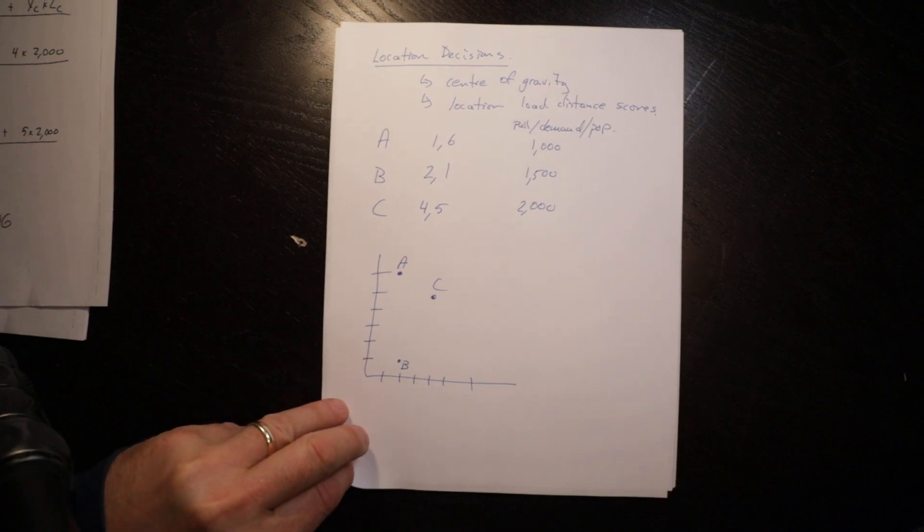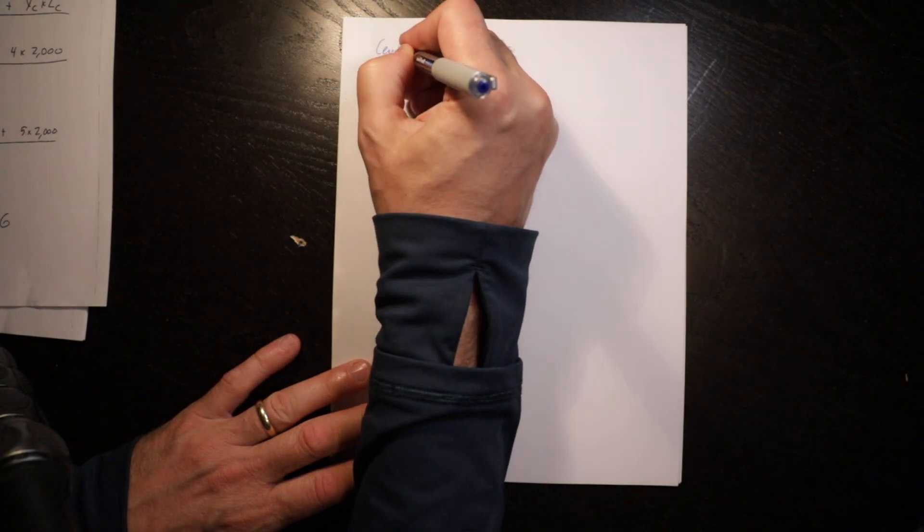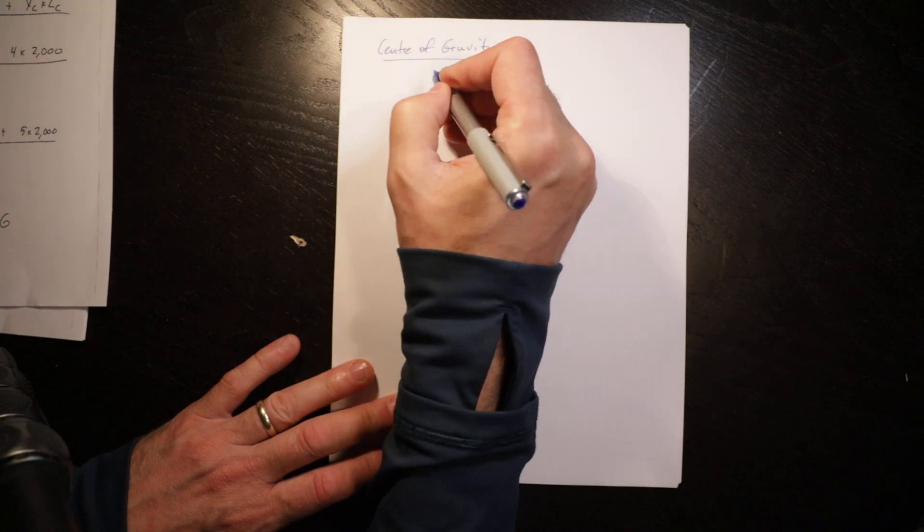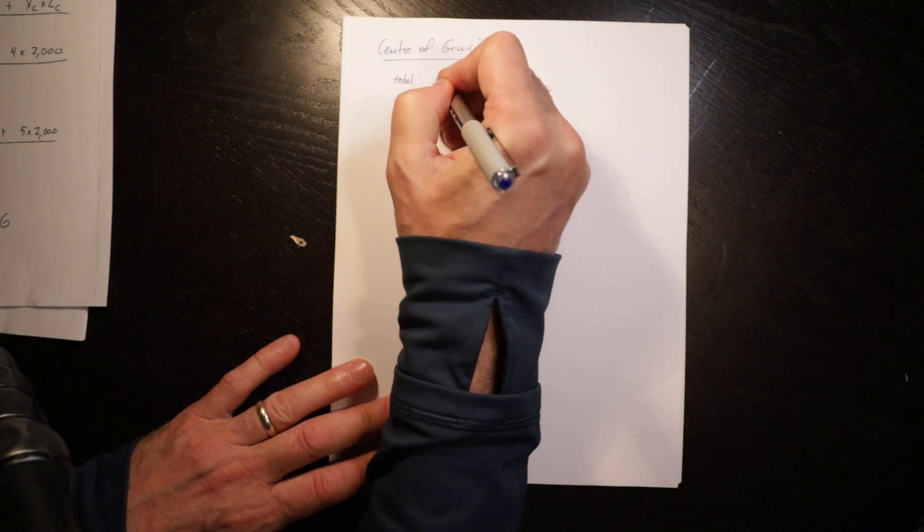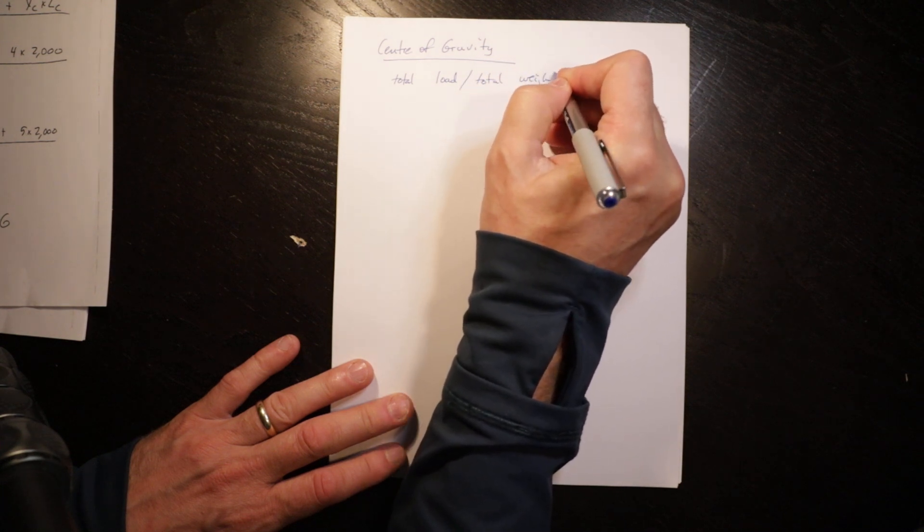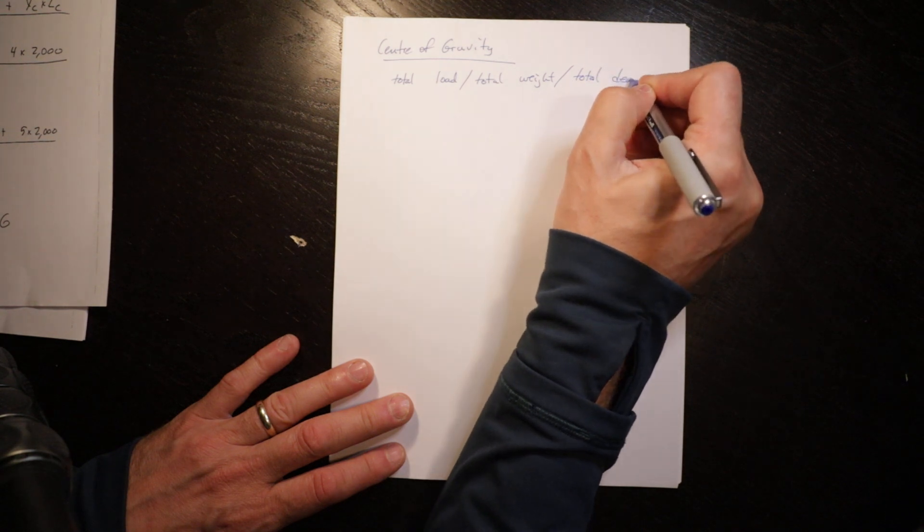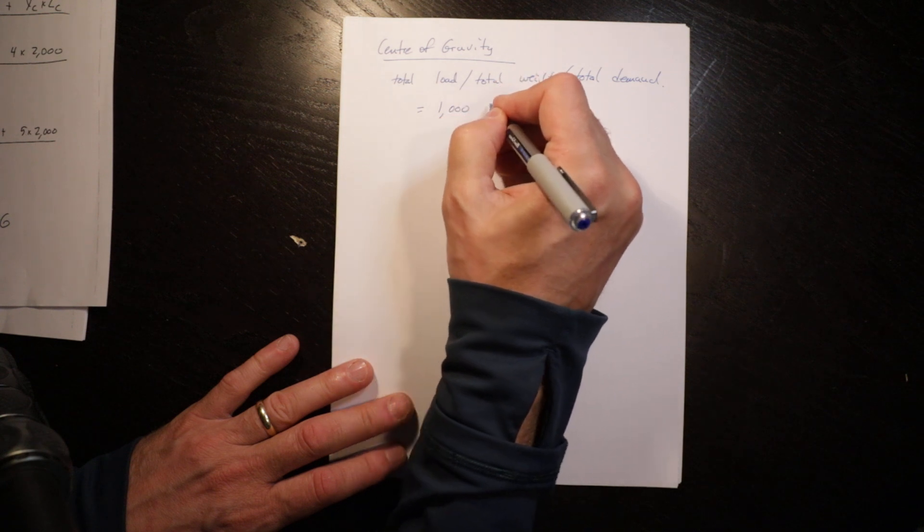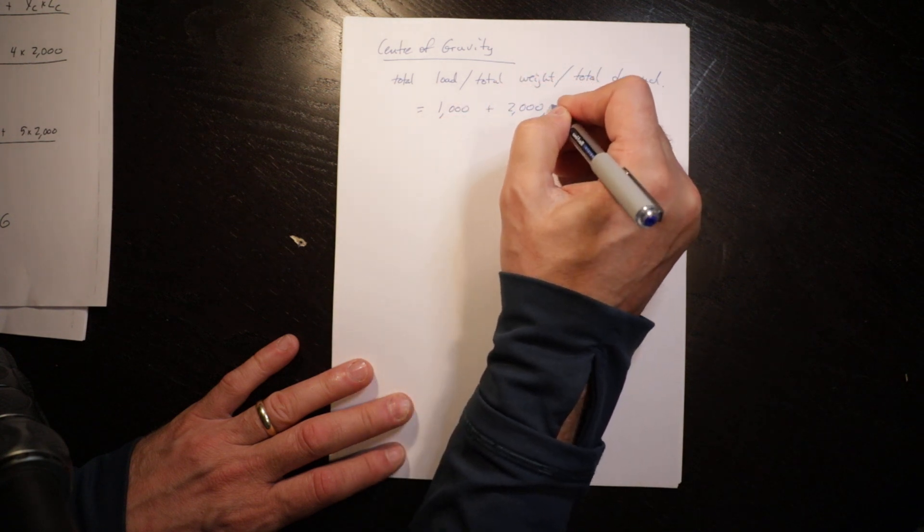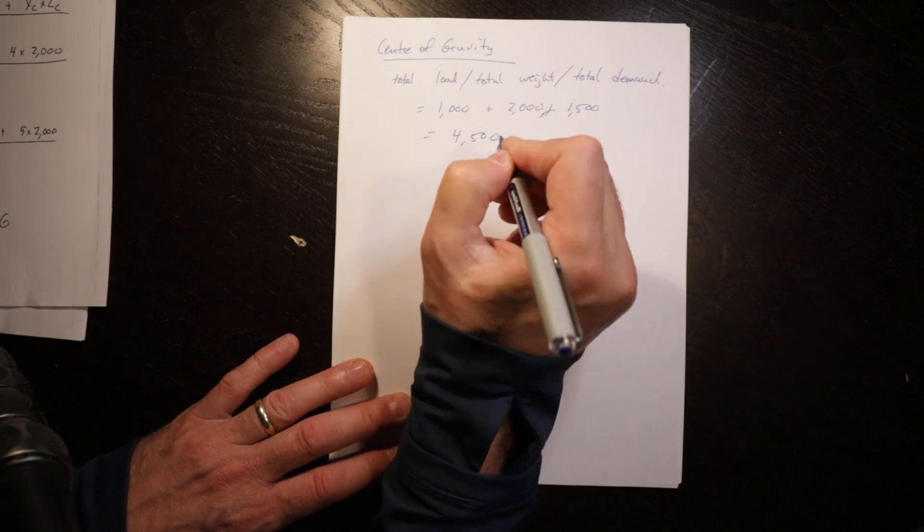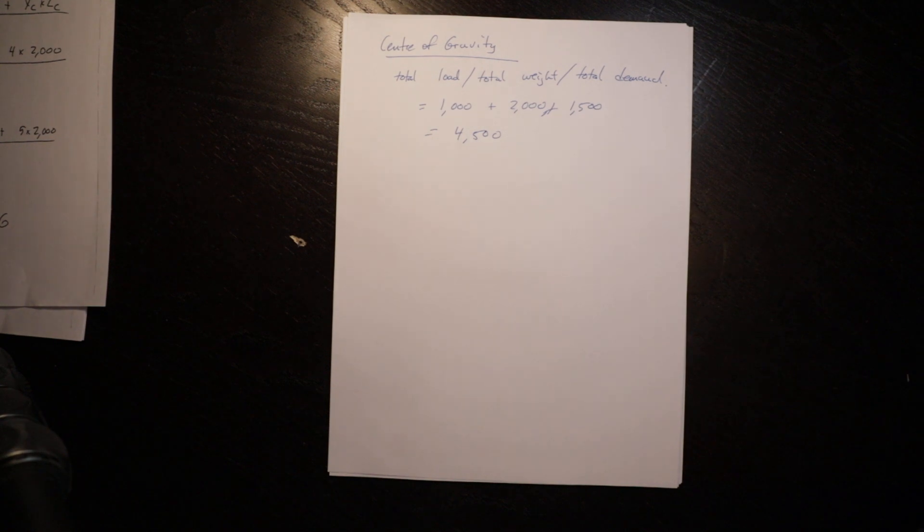The first thing we need to do for the center of gravity is calculate the total load or total demand. That is simply 1,000 plus 2,000 plus 1,500, which equals 4,500. So that is the total demand that this location will face.